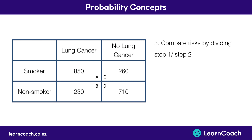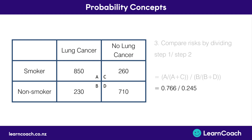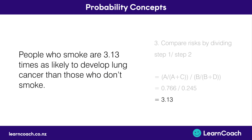In the final step we compare the two risks by dividing step one by step two. Plugging in our numbers — 0.766 divided by 0.245 — we get a relative risk of 3.13. We interpret this by saying people who smoke are 3.13 times as likely to develop lung cancer than those who don't.